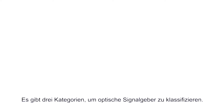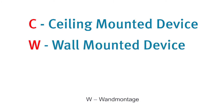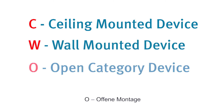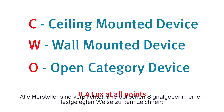There are now three categories that a VAD can be rated under: C for ceiling mounted device, W for wall mounted device, and O for open category device. The specified output for a VAD is now required to be 0.4 lux at all points within the specified coverage volume.